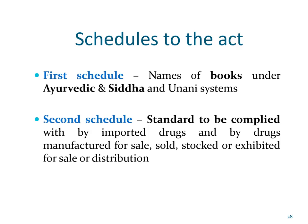This section concludes with mention of the schedules to the DNC Act. There are two schedules: the first schedule contains the names of books under the Ayurvedic, Siddha, and Yunani systems to be referred while making, labeling, or analyzing these formulations. The second schedule consists of standards to be complied with by imported drugs and by drugs manufactured for sale, sold, stocked, or exhibited for sale or distribution.